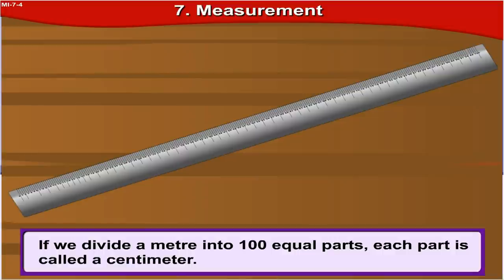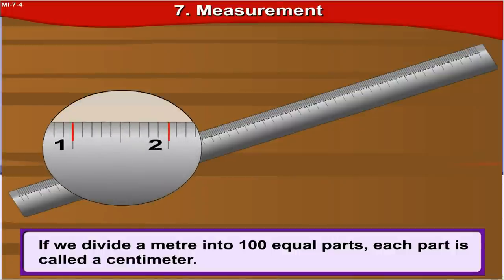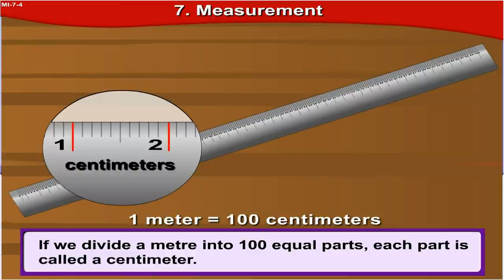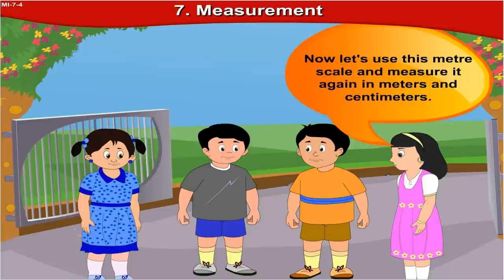The meter is a standard unit which is used for measuring length. If we divide a meter into 100 equal parts, each part is called a centimeter. So I can say that 1 meter is equal to 100 centimeters. We measured the distance between the gate posts with a string — now let's use this meter scale and measure it again in meters and centimeters.